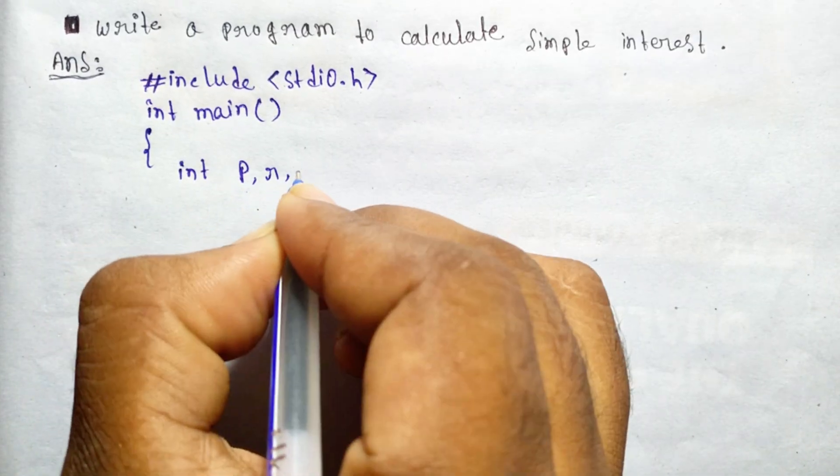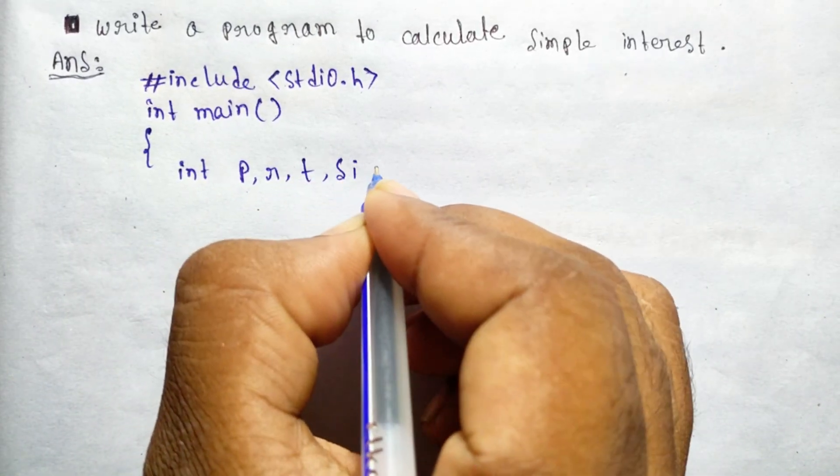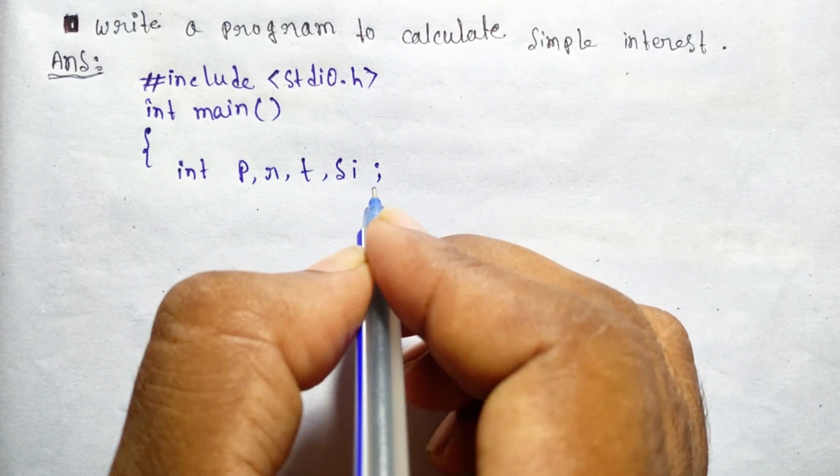The program then defines the main function and declares four variables: P, R, T, and SI.